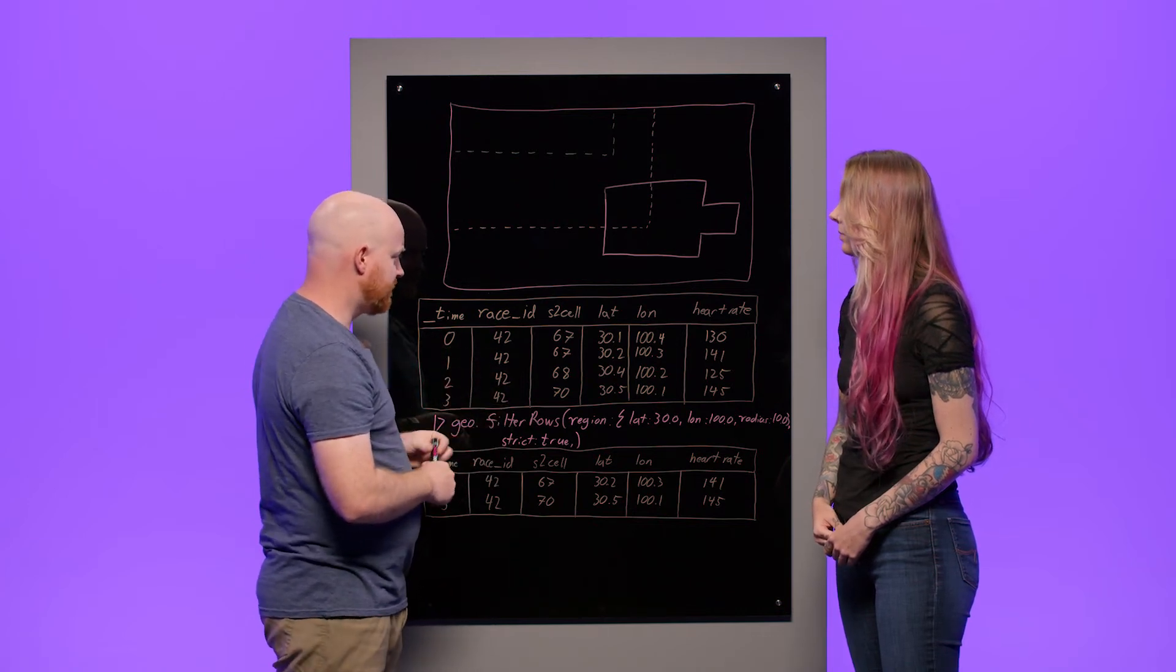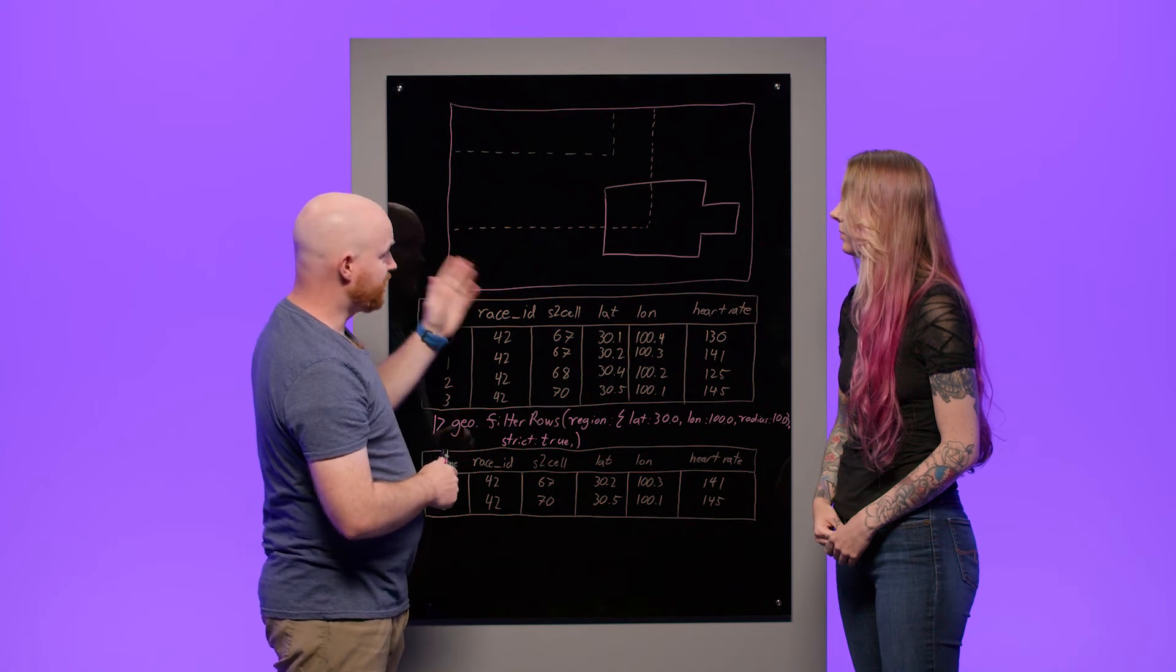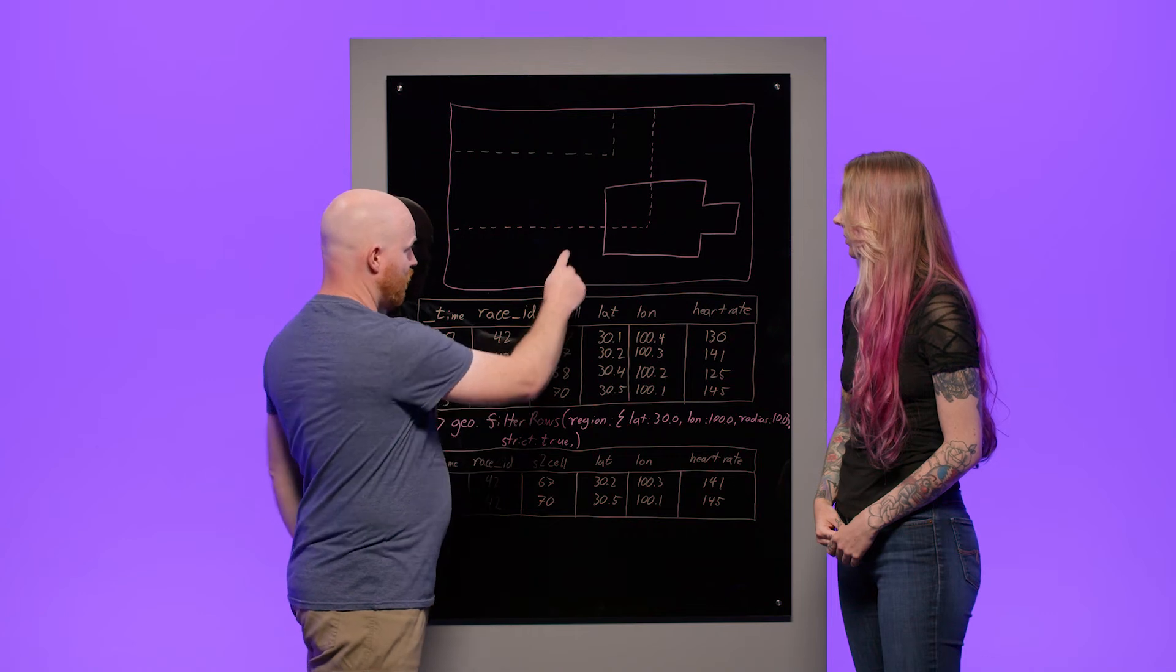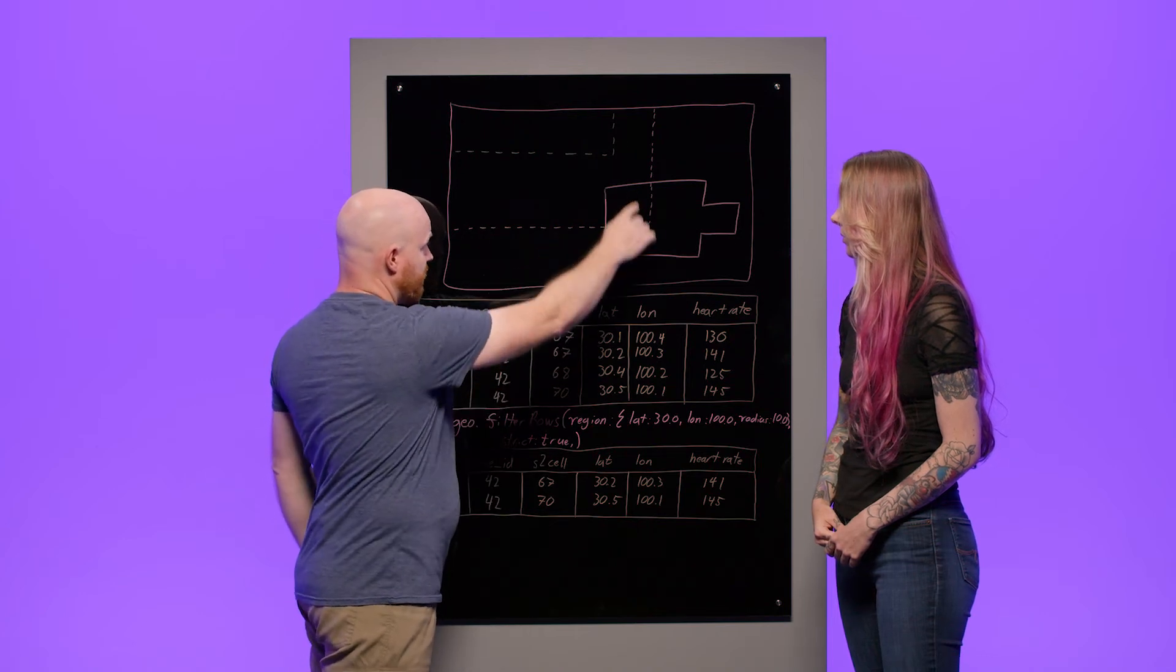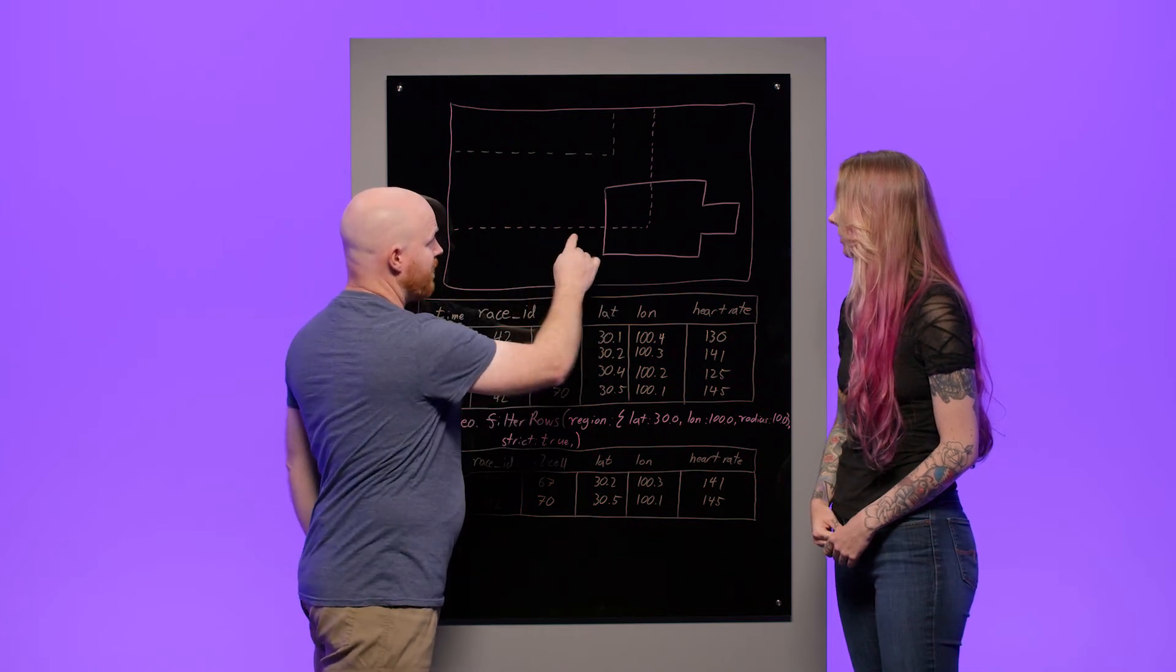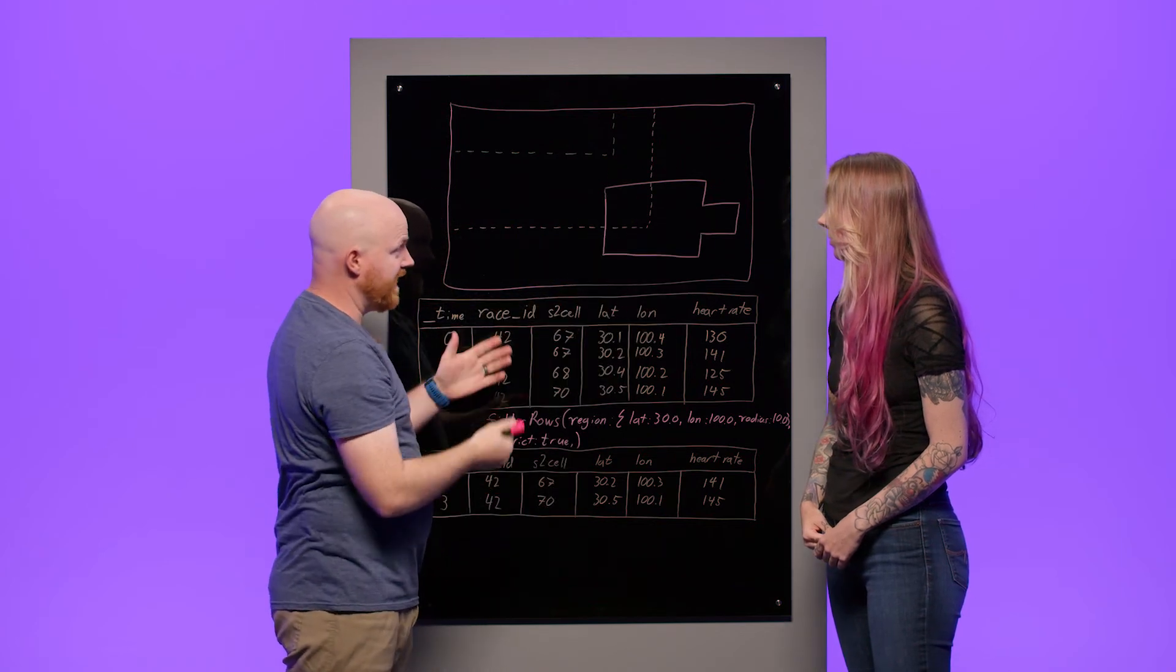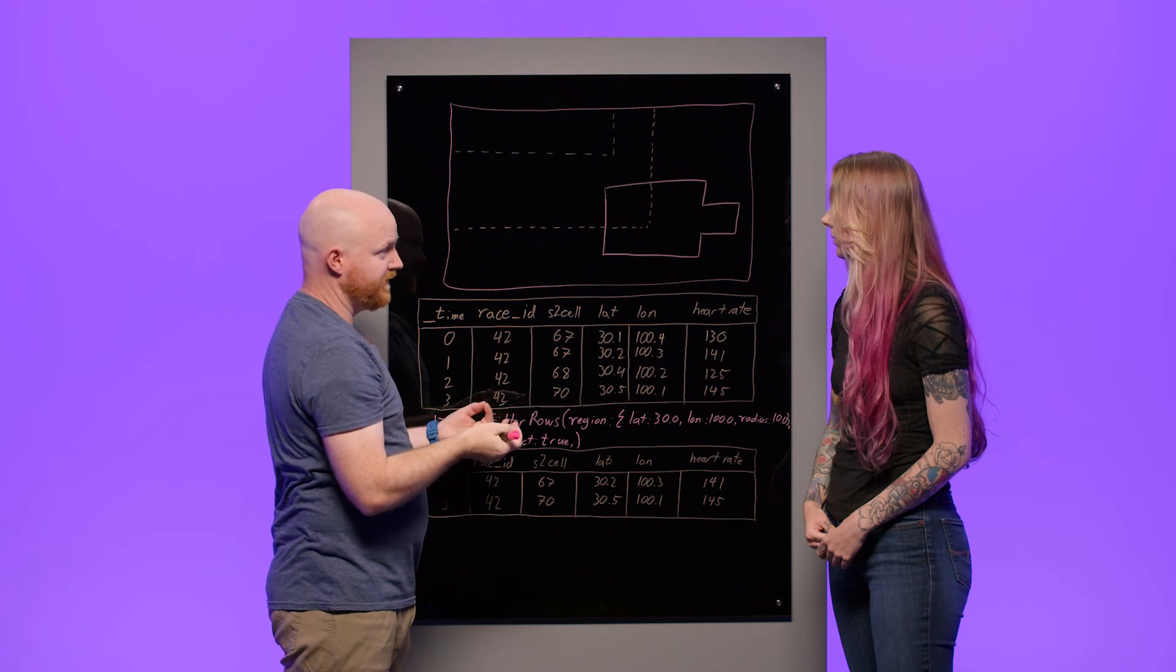And the reason this works is we can use the S2 cell IDs to make the computation really fast. So when we get your input data, we already know the cell IDs of the track, and then we compute the cell IDs that are inside the region, and we see if any of those overlap, and we say that it must be inside the region.